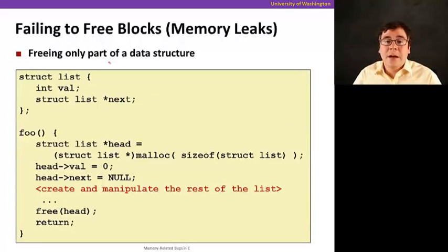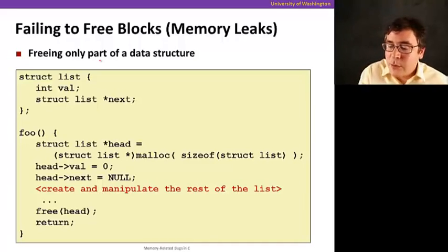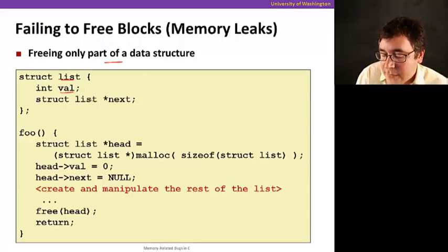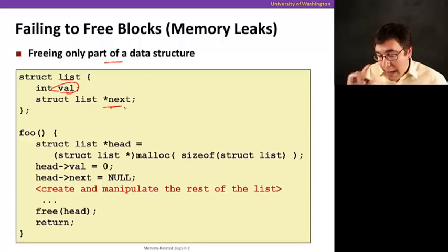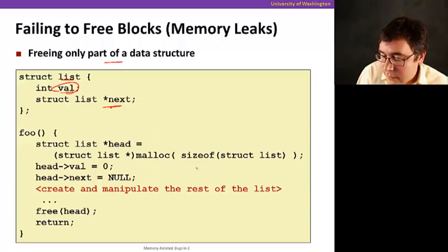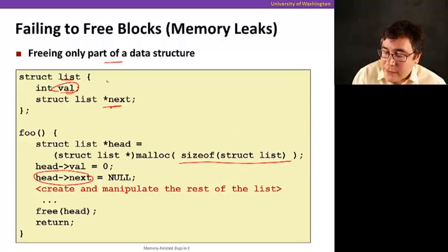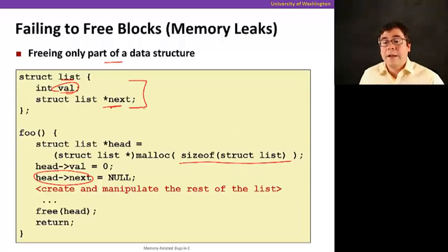Now, another problem that happens, and that might lead to failing to free blocks, and lead to memory leaks, is that you're only freeing part of a data structure. For example, suppose that we have a struct here called list. It has a certain, it's a linked list, right? It has a value, it has a payload here, and then a pointer. And then, when we create this list, you know, create a head here, allocate sizeof struct. And then, I set next here to null, so I'm not pointing to anything. When I'm allocating here, I'm allocating space for both the value and the pointer.